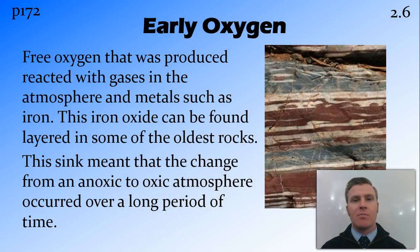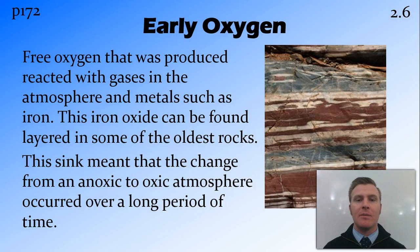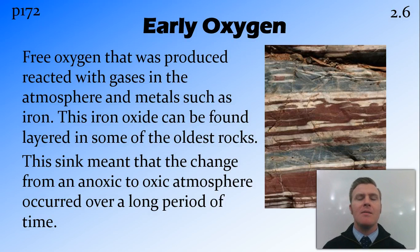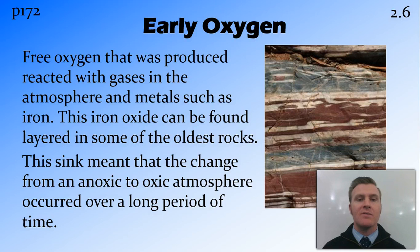That early oxygen produced by the stromatolites and algae basically wasn't making it into the atmosphere. The first thing happening to that oxygen was that it was combining in chemical reactions with the gases in the atmosphere — things like hydrogen and methane. These are flammable gases, and without oxygen, lightning causes these gases to produce amino acids, as seen in previous videos. However, once oxygen was present, that lightning basically turned it into a fireball, so the oxygen would be used up in those reactions.